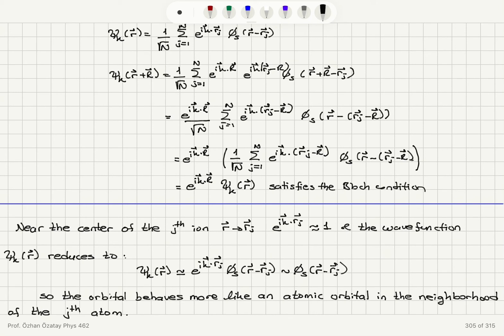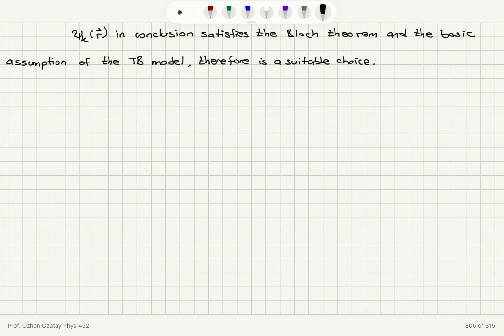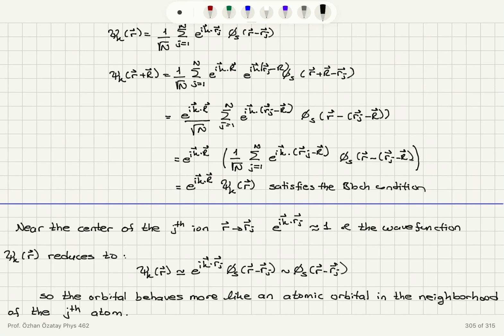so the orbital behaves more like an atomic orbital in the neighborhood of the jth atom and the wave function psi k of r in conclusion satisfies the Bloch theorem and the basic assumption of the tight binding model therefore it's a suitable choice